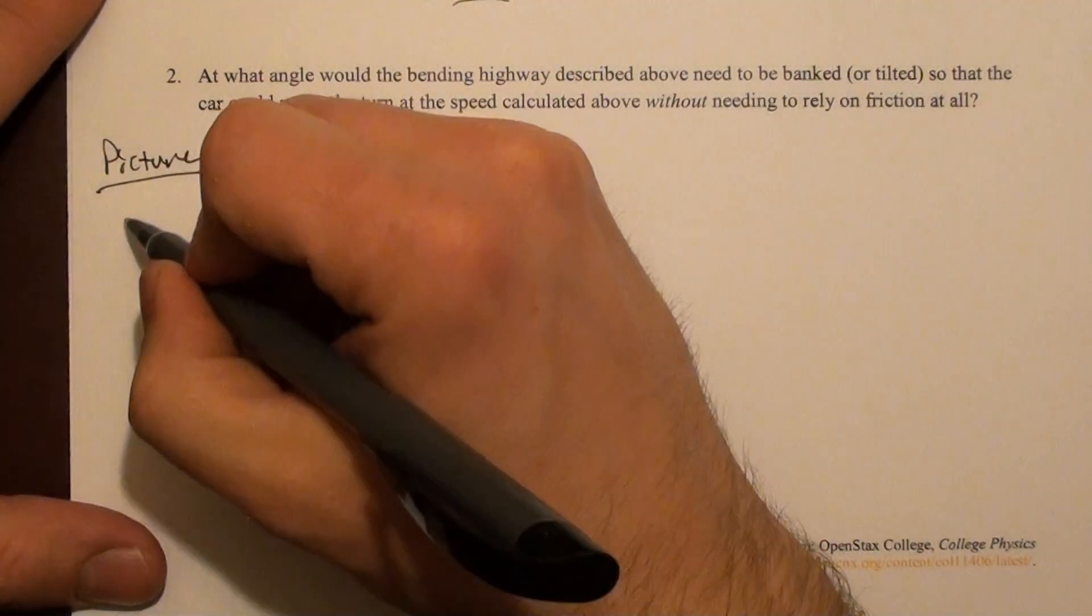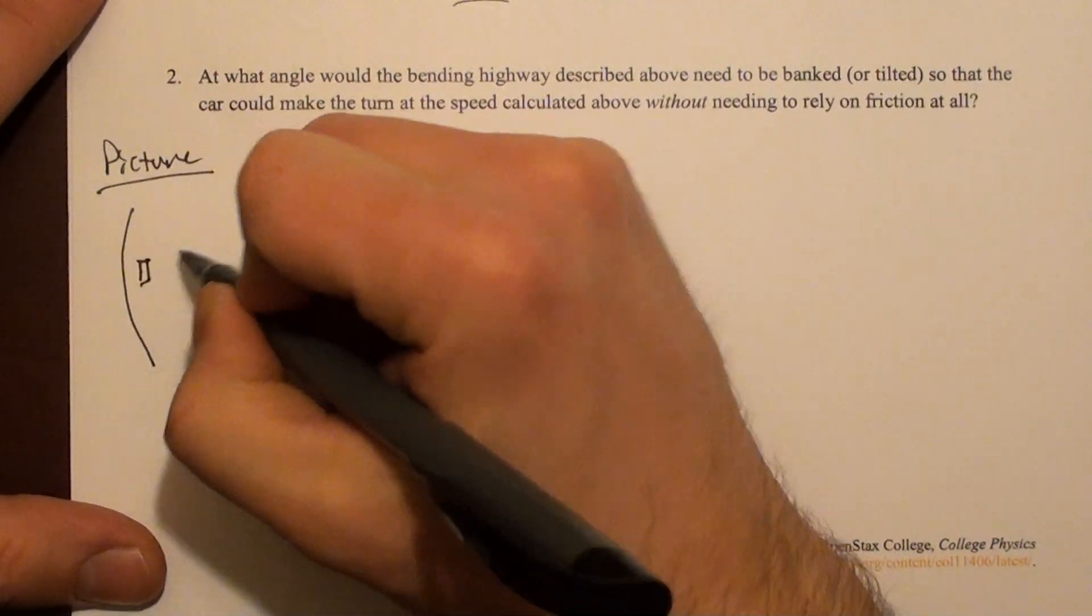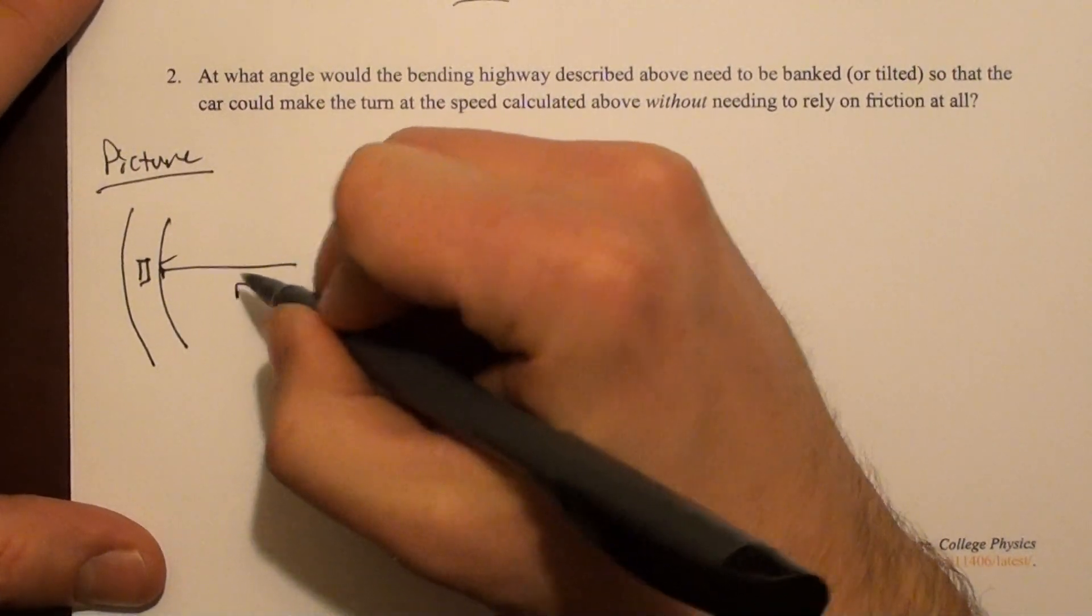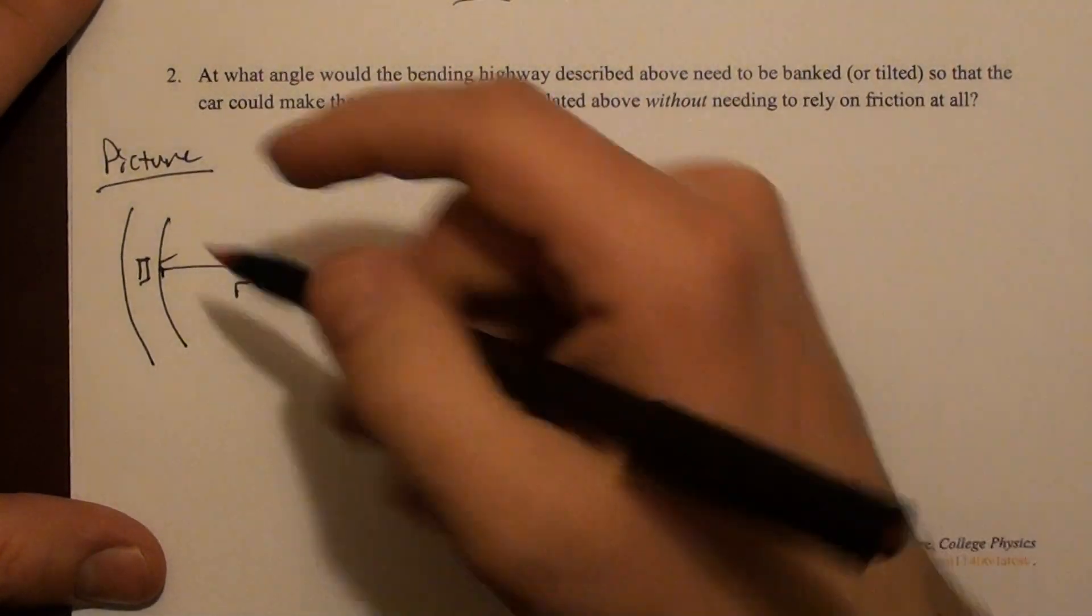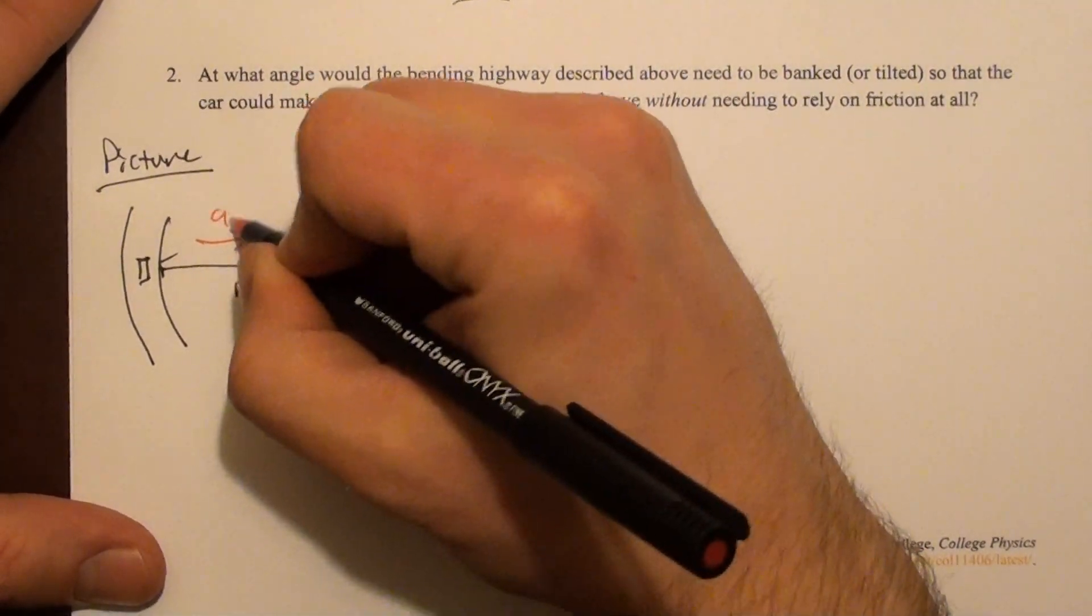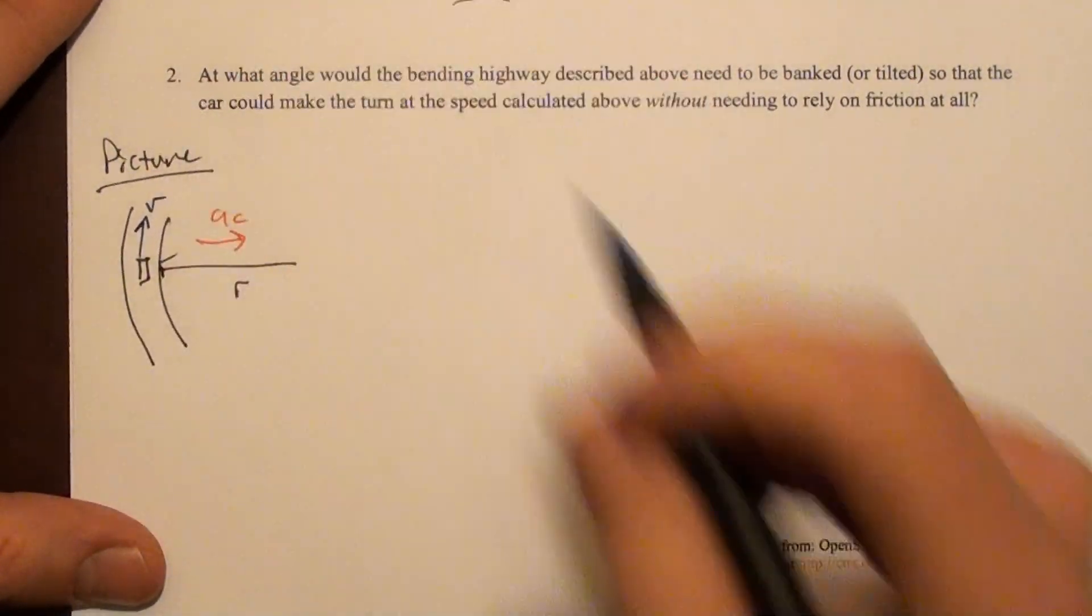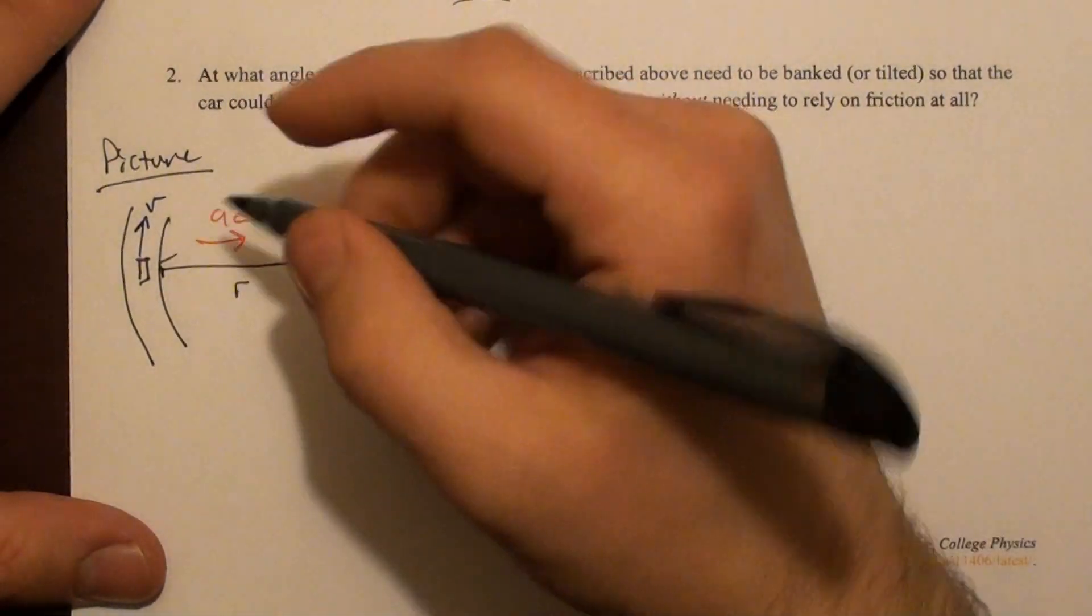We'll draw the picture. Our initial picture is the same. We still have this car on this bend with some radius r, some centripetal acceleration a_c, some velocity maybe v. This is our picture from above.